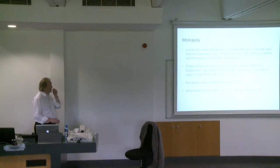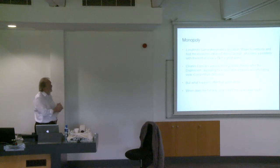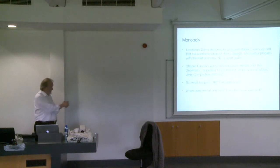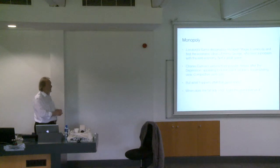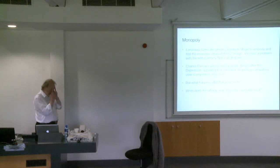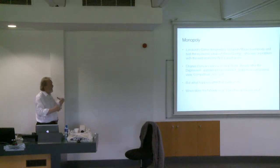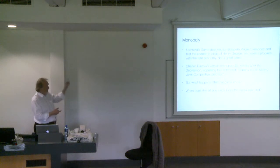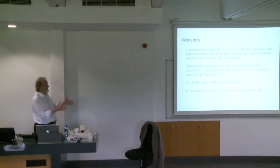Monopoly was designed by Elizabeth Magee because she wanted to embody the economic ideas of Henry George, a 19th century economist who had a problem with the rent economy. She got a patent for it in 1904. It's not a great game. When it was improved upon by Charles Darrow, Parker Brothers sold both the Landlord's Game and Darrow's version, Monopoly, side by side in the 1930s. They had both on their catalogue, but Darrow's version took over.